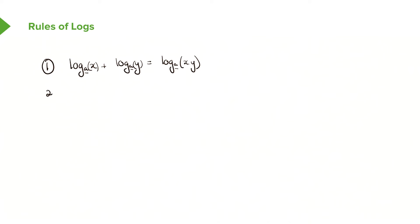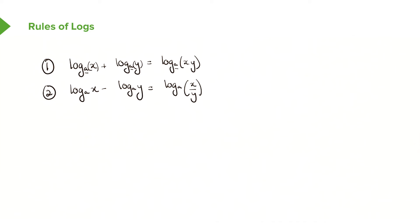The second rule is the subtraction rule. So if we have log base a of x minus log base a of y, this combines to log base a of x over y — it divides because it's being subtracted. If the bases are the same, you are allowed to combine the logs into one logarithmic term.